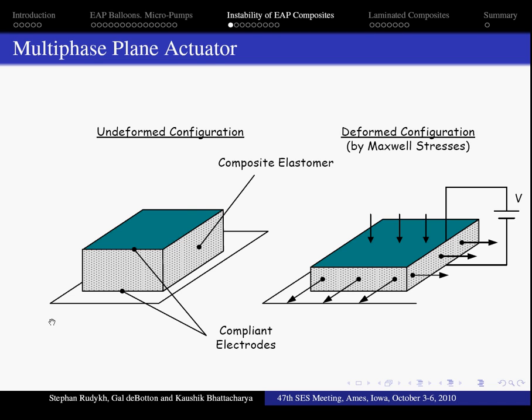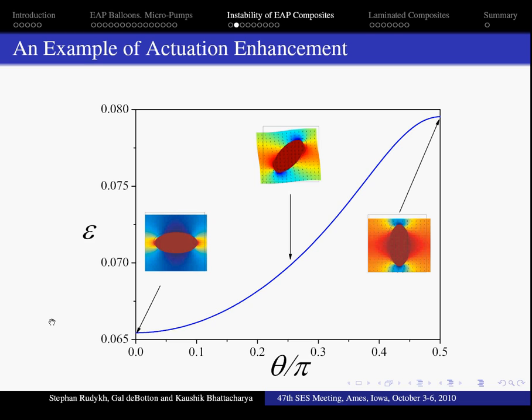As an example, let's examine a periodic matter with ellipsoid inclusions. And the only change in microstructure that we examine here is the angle of the ellipse orientation. Here Epsilon is the mean principal stretch. So we see that microstructure may significantly improve the actuation. Of course, a more complicated microstructure with different parameters can be considered and an optimal microstructure may be found.